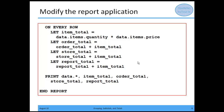When we're done accumulating on every row, we print out our data row, and we also send across on every row the item total, the order total, the store total, and the report total.